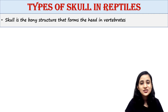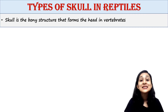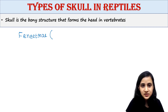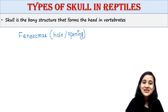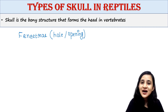First of all, what is skull? Skull is the bony structure that forms the head in vertebrates. Reptiles possess large heads and big jaws but small necks, therefore the skull becomes too heavy for the neck to support. Because of these fenestrae — holes or openings — these are developed in reptiles to lighten the skull.